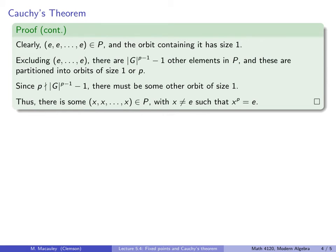Therefore, there is some other fixed point, in other words, some other p-tuple of this form, (x, x, ..., x), where x is not the identity element. And such an element, by definition, satisfies x^p = e. And that's exactly what we had to prove.